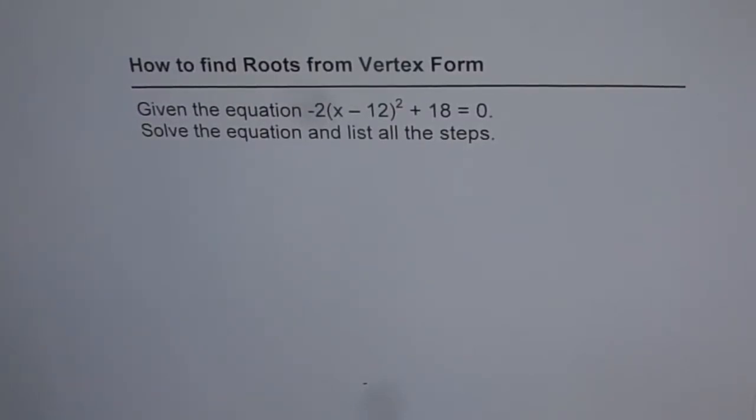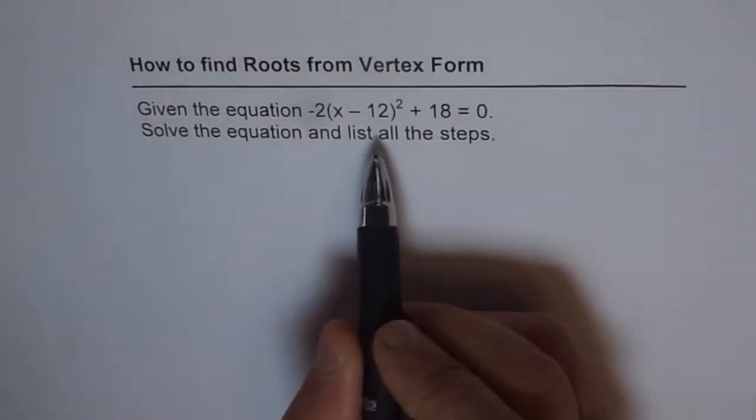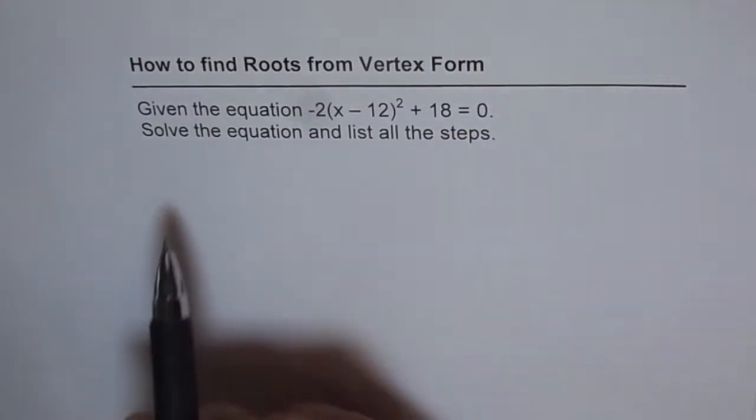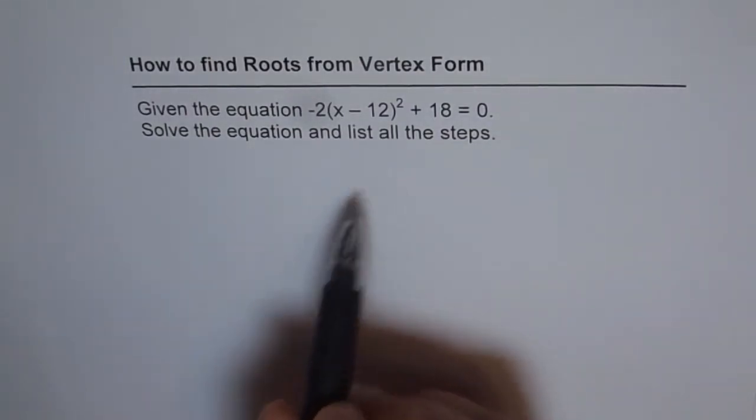How to find roots from vertex form. Given the equation -2(x - 12)² + 18 = 0, solve the equation and list all the steps.